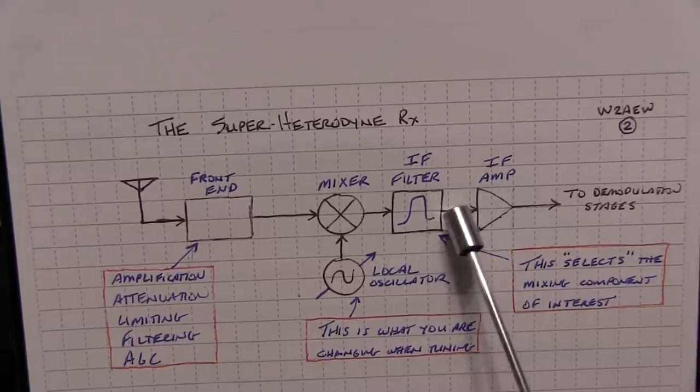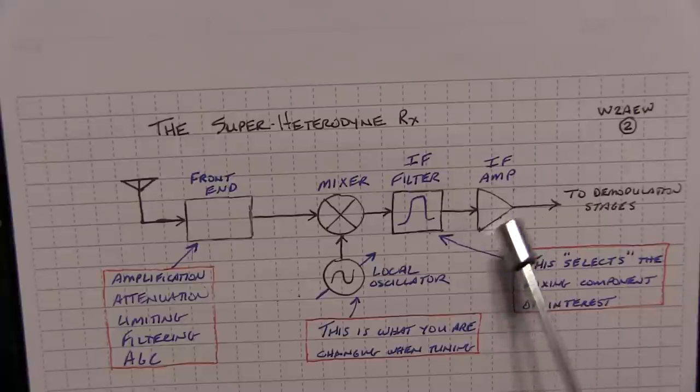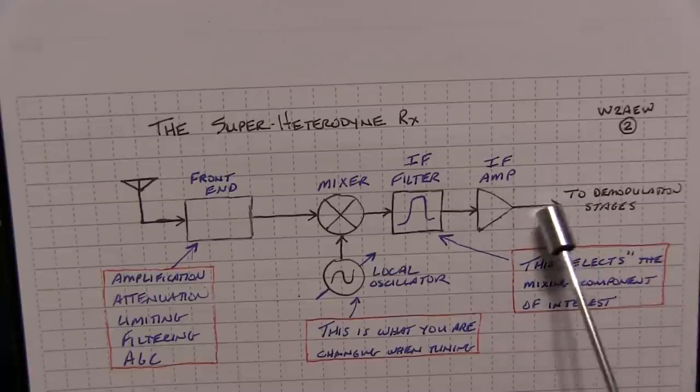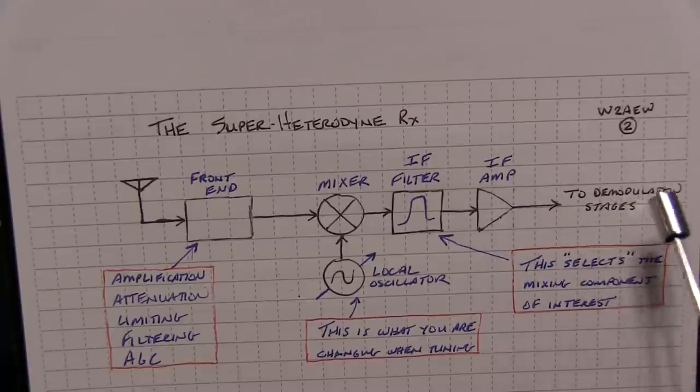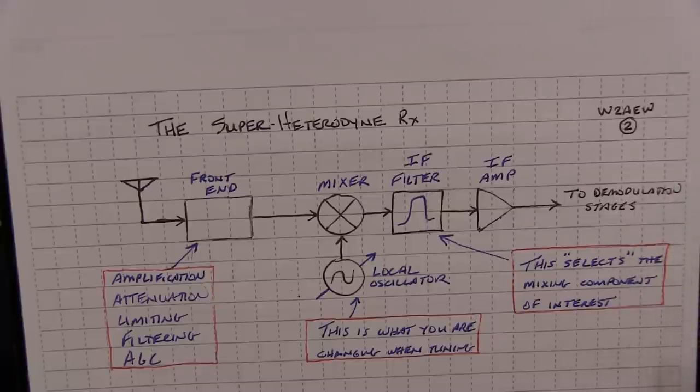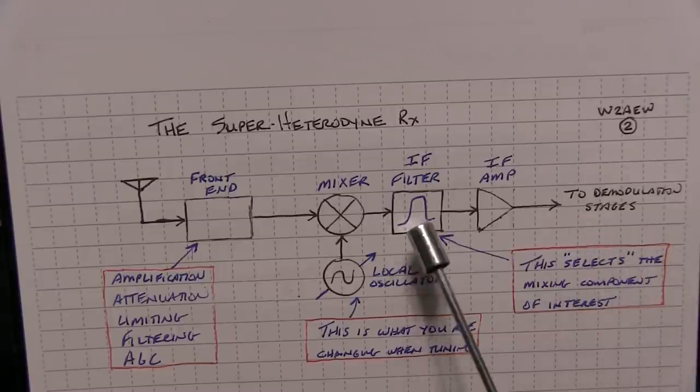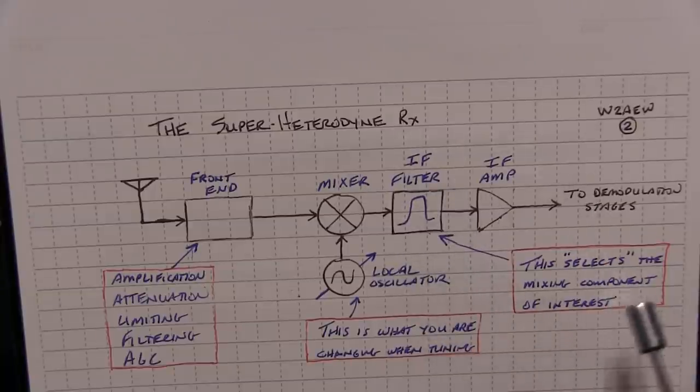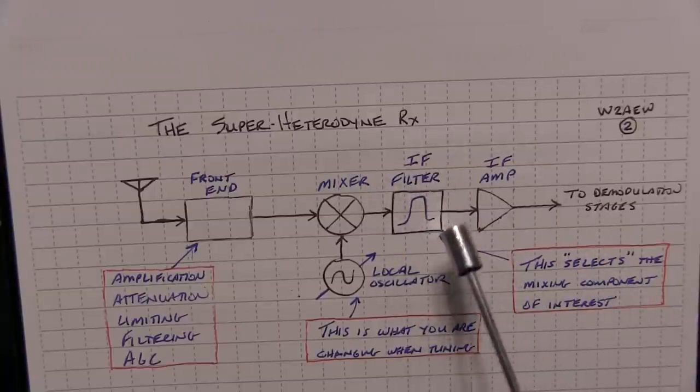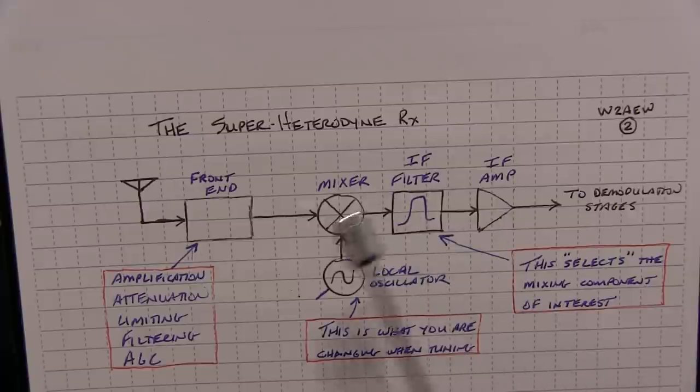And then finally the output of that IF filter generally goes through some amplification, maybe some additional filtering, and then off to the demodulation stages, whether it's an amplitude detector for AM, or a product detector for single sideband, or CW, or maybe even a ratio detector for FM. But it's really the job of the IF filter to provide the selectivity of the receiver, in terms of being able to select and receive the signal of interest, and reject signals on either side of it, so we only are listening to one particular station at a time.